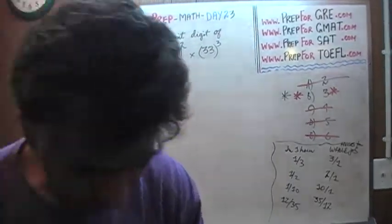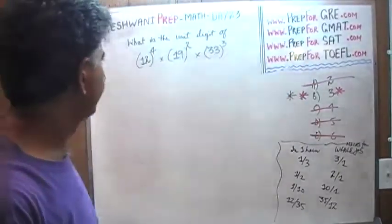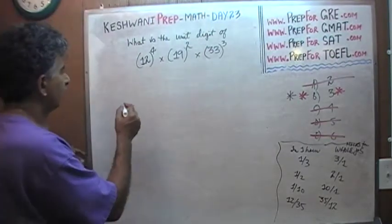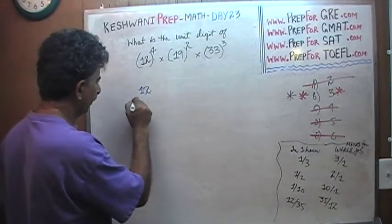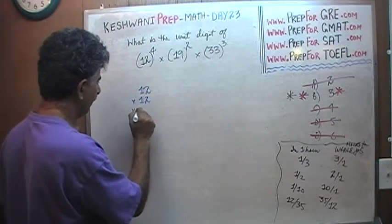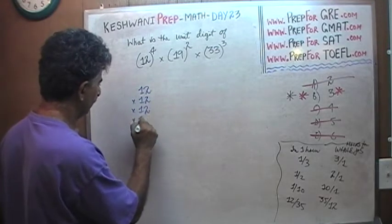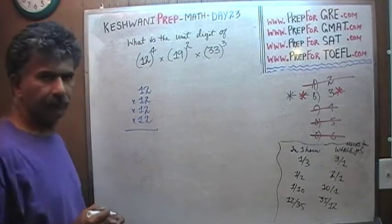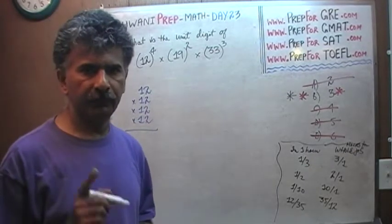Alright, so what do we do here? Well, 12 raised to 4. 12 raised to 4 is 12 times 12 times 12 times 12 of course. Stay with me in this story here. Stay with me in this story.